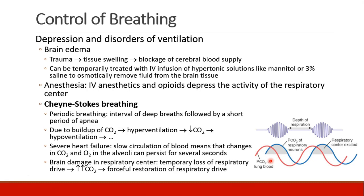There are certain conditions that can affect your ability to control your breathing. One example is brain edema: if the brain sustains trauma and starts to swell, it could block blood supply to the brain and affect your ability to control breathing. You could treat it temporarily by giving a hypertonic solution like mannitol or 3% saline to osmotically remove fluid from the swollen brain tissue and restore cerebral blood supply. Anesthesia can also depress ventilation — a bolus of propofol or sufficient opioids can depress the activity of the respiratory center.